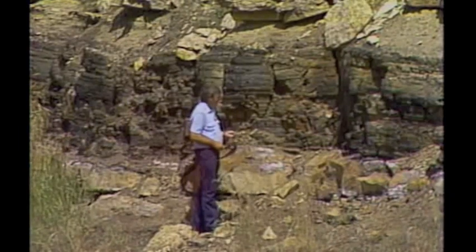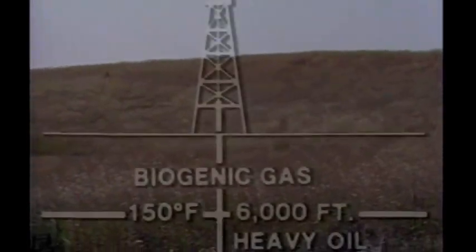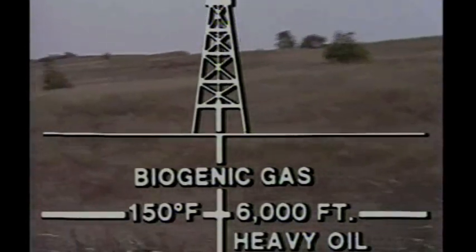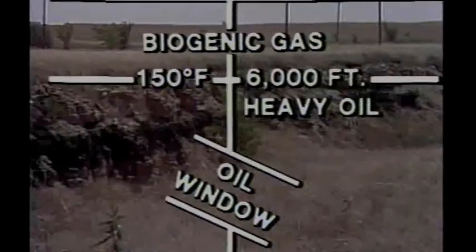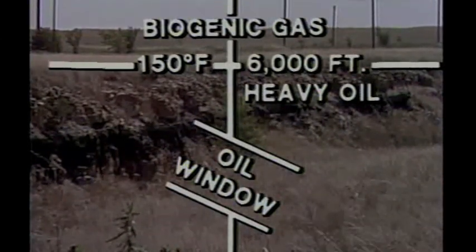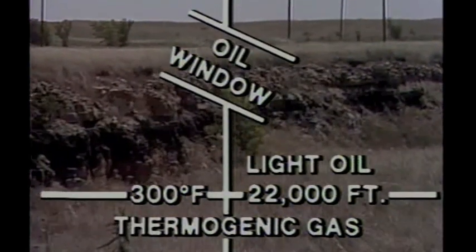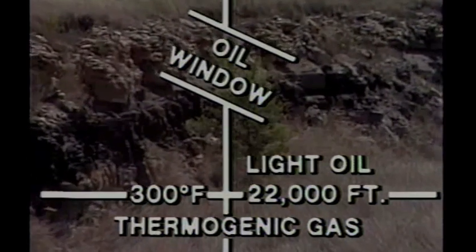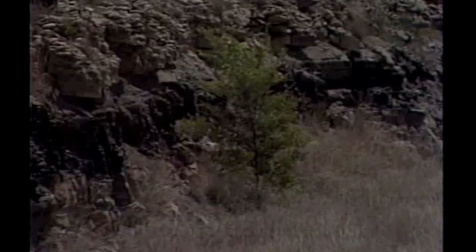As you go down into the earth, it becomes hotter and hotter. From the surface of the earth down to about 150 degrees Fahrenheit, only bacteria works on this organic material to produce methane gas. But after you reach about 150 degrees Fahrenheit, temperature takes over and turns the organic material into oil. Heavy oil is produced at very shallow depths from about 150 degrees Fahrenheit down, and light oil at deeper depths and higher temperatures down to about 300 degrees Fahrenheit. This is called the oil window. Below 300 degrees Fahrenheit, the oil is broken down into gas, and oil cannot occur below 300 degrees Fahrenheit.